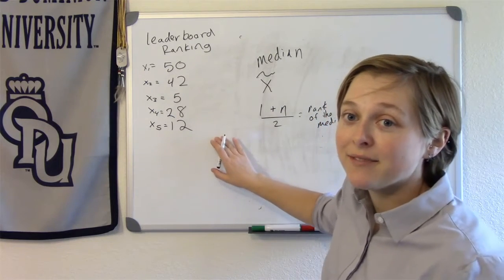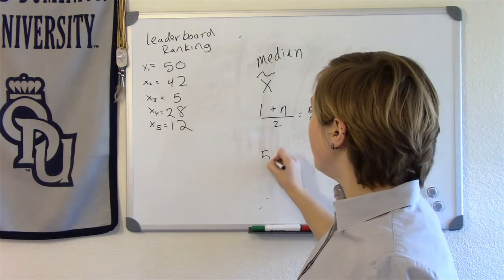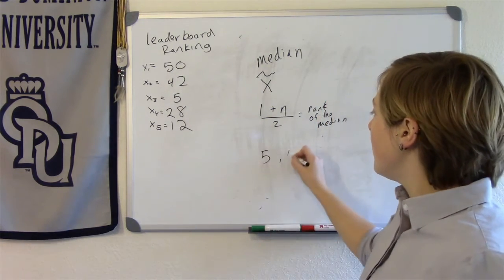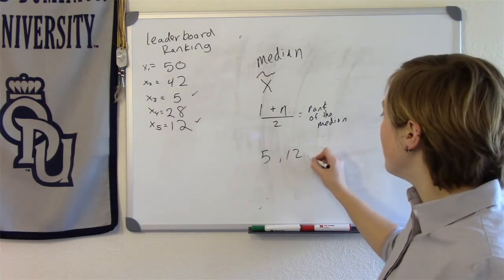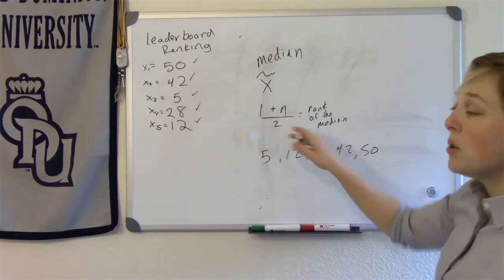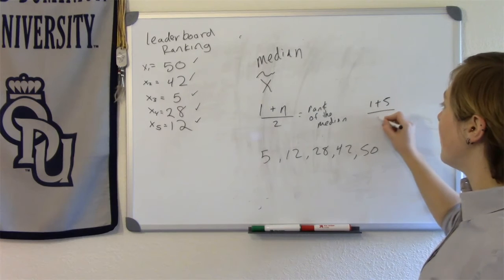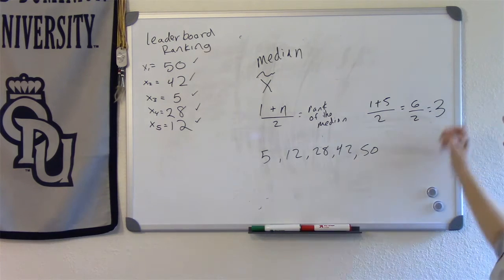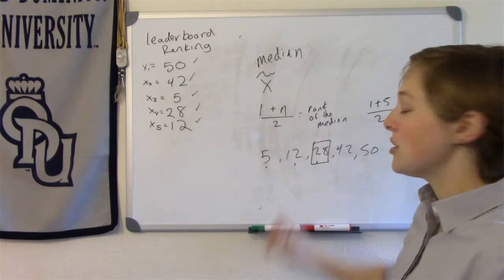First thing in finding the median, you should sort your data. We're trying to find the middle observation, so the data is going to have to be sorted. So I have 5, then 12, I like to put little checks as I go to make sure that I include all my data points. Then we got 28, and we got 42, and we got 50. Now, if I'm going to use this equation, then the rank of the median would be 1 plus 5 divided by 2, because there's 5 observations here. So that's 6 divided by 2, which is 3. So the third observation would be my median. 1, 2, 3. This is the third observation. That's my median.